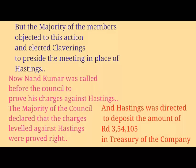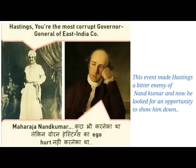Warren Hastings had refused to allow Nandkumar into the meeting, so all the majority members turned against him and he cancelled the meeting. In protest of this action, they elected Clavering to head the meeting. Nandkumar was then called before the council to prove his charges against Hastings. The majority of the council declared that the charges leveled against Hastings were proved right, and Hastings was directed to deposit an amount of three lakh fifty-four thousand, one hundred and five rupees into the treasury of the East India Company.